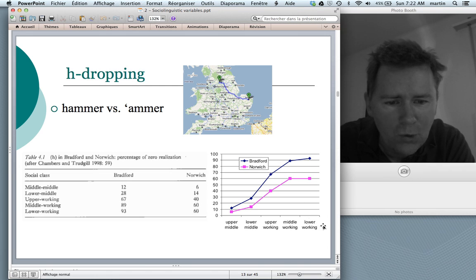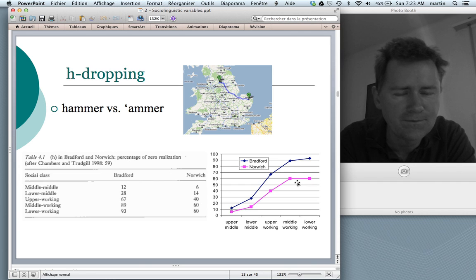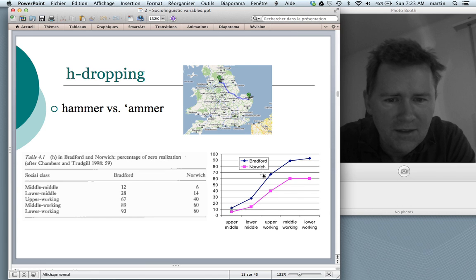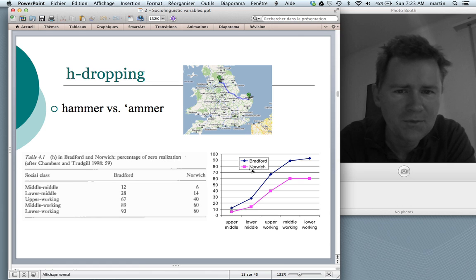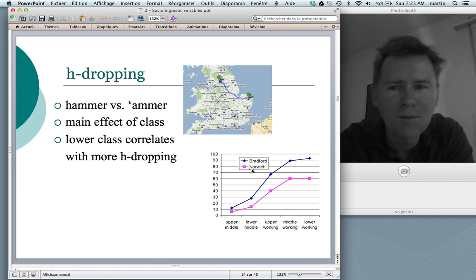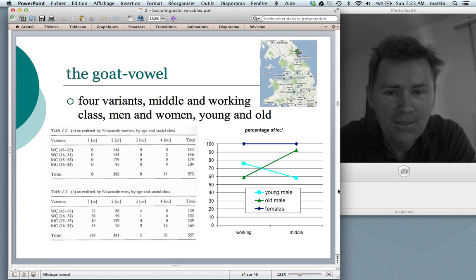And what you see is that the lower-working classes and the middle-working classes they have the highest ratio of H-dropping. Now you notice also that it is sort of the same. The curve is more or less the same in Bradford and in Norwich. So we see the same effect of class influencing H-dropping across the two cities. What this means is that in the hammer variable we have a main effect of class. It's class that matters. And lower-class, so the further we go to the right in the graph, the higher the rate of H-dropping gets. Lower class correlates with more H-dropping. The poorer you are, the fewer H's you can afford, you could say.